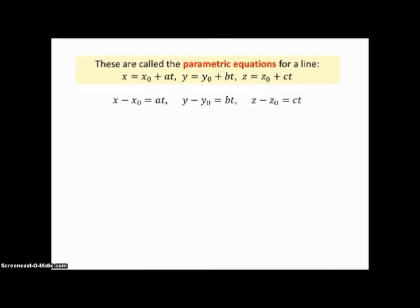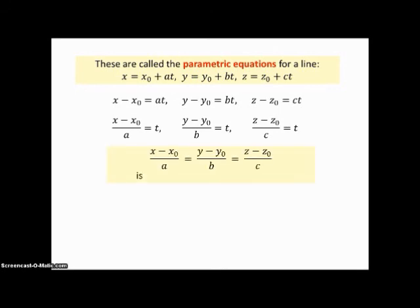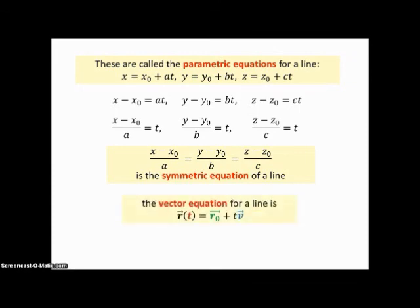Now if we solve for t in each of these equations — moving x₀, y₀, z₀ to the other side and dividing by the components of vector v — we can solve for t. Since t equals all three expressions, all three are equal to each other. This is called the symmetric equation of a line. So now we've got three different ways to express equations for a line in space: the vector equation, the parametric equations, and the symmetric equation.